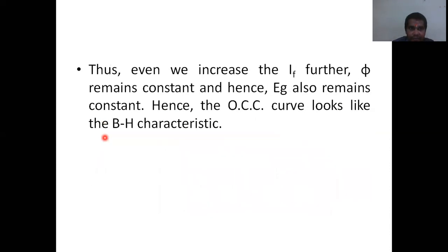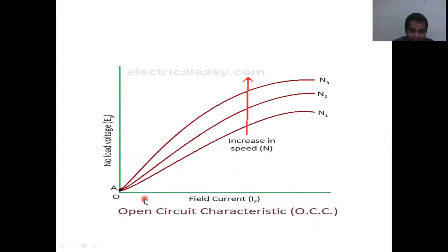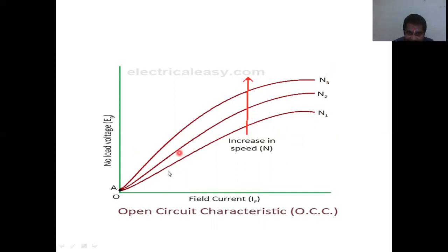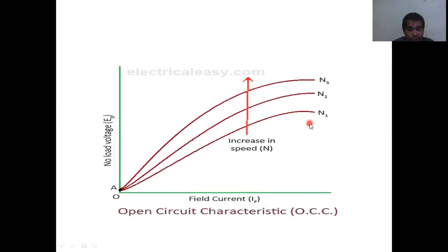The graph is drawn between field current and no-load voltage for different speeds. For example, this curve is for speed N1 (say 1000 rpm), this for N2 (200 rpm), and N3 (300 rpm). As speed increases, voltage also increases, and the curve saturates after a certain field current because we are using magnetic material. So the open circuit characteristic is drawn between field current and no-load voltage for a particular speed with no load on the generator.